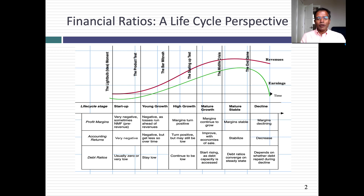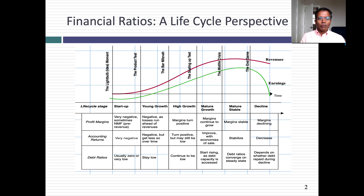Take profit margins. When companies are very young, you should expect to see perhaps positive gross margins, but negative margins on every other dimension — negative operating margins, negative net margins. As companies grow, the first thing that's going to turn positive are their operating margins. And then as they become more mature, net margins will turn positive as well.